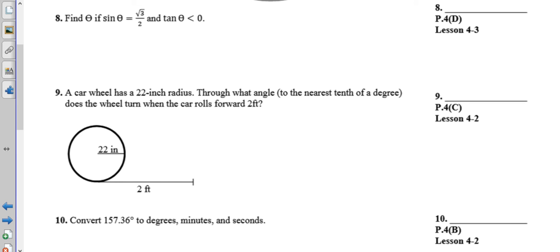All right, number eight. Find theta if sine theta is square root of three over two and tangent theta is less than zero.